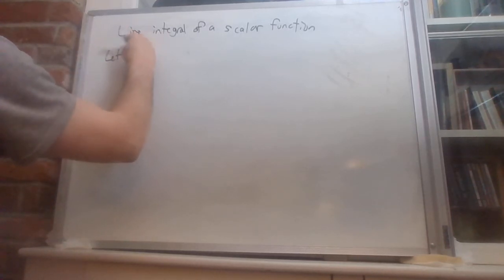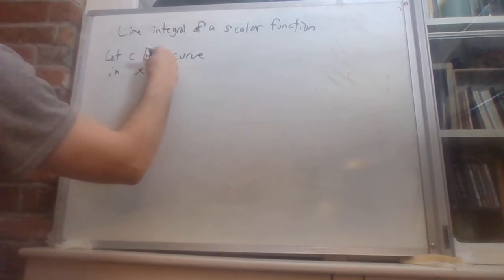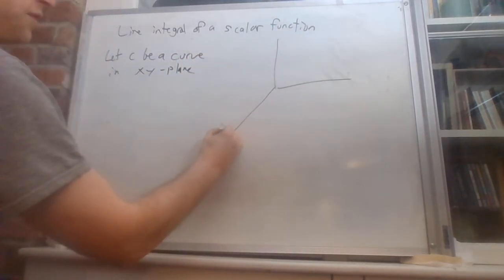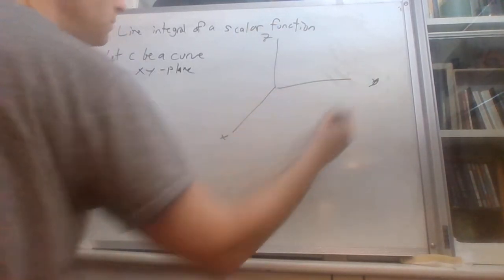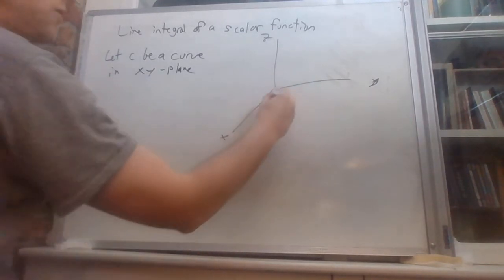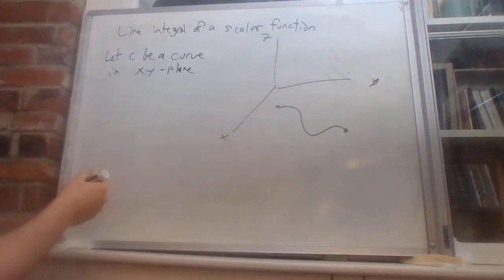So first, let C be a curve in the xy plane. In 3-space, we have the x axis over here, y axis over there, z axis on top. The xy plane is this flat place on the bottom, it's the floor. So I've got some curve in that floor.